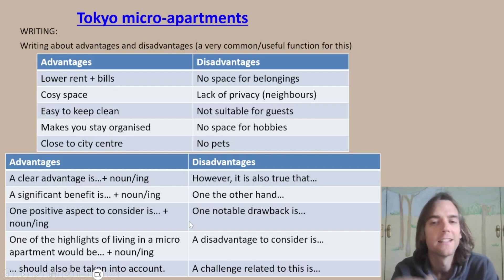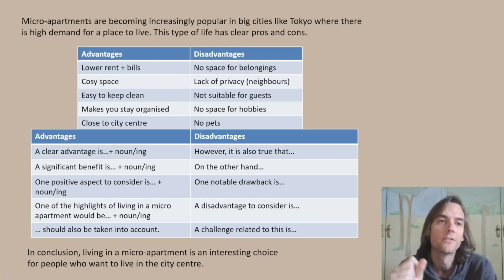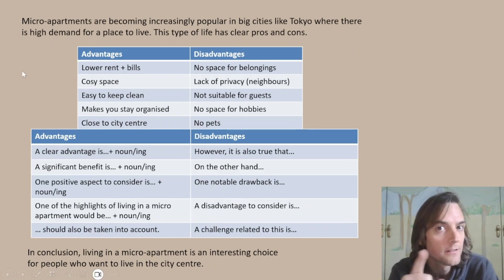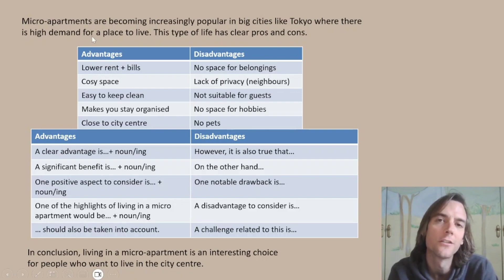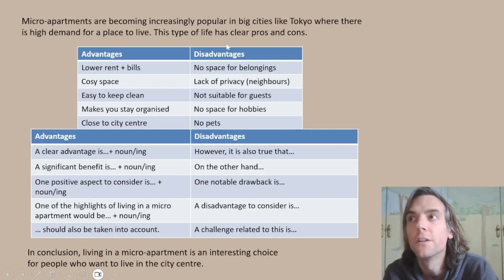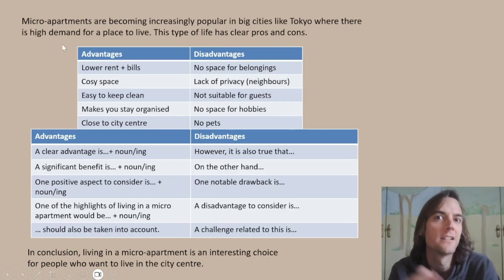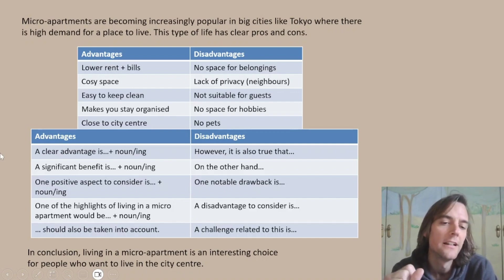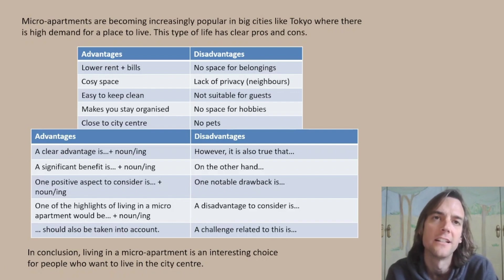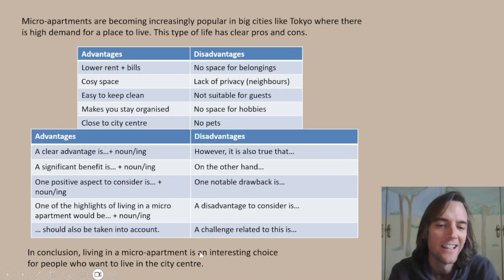Take your ideas, plug them into some of the phrases, add an introduction and conclusion, and you've got a lovely essay. The introduction might look like: 'Micro apartments are becoming increasingly popular in big cities like Tokyo, where there is high demand for a place to live, and this type of life has clear pros and cons.' It's a good introduction because it introduces the topic and signals the function of the writing. The conclusion: 'Living in a micro apartment is an interesting choice for people who want to live in the city center' — a clear, neutral, non-committal conclusion.